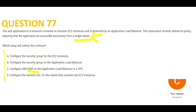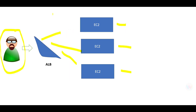We never do geo-territorial access via security groups, so those options are wrong. Neither do we use network ACLs. If you want to block a certain range of IPs, use security groups; if you want to block a whole nation, use WAF. Place WAF before the load balancer so the request doesn't even enter the ALB, let alone the EC2 instances.